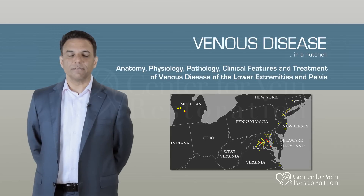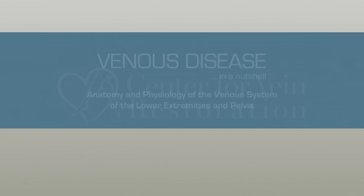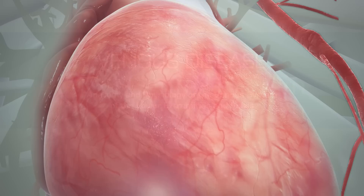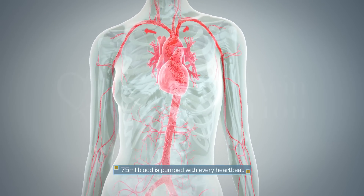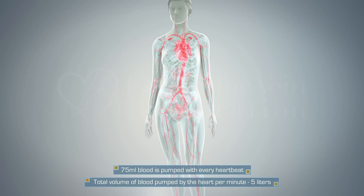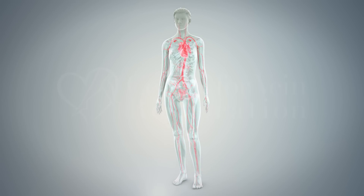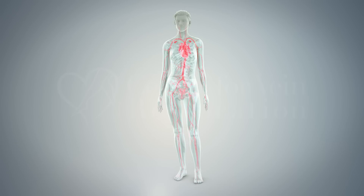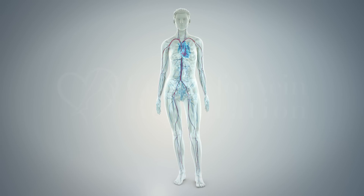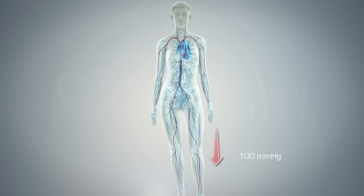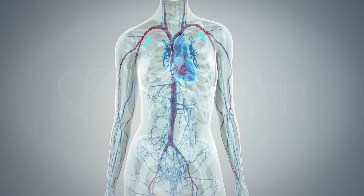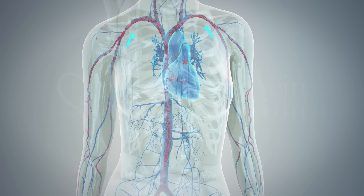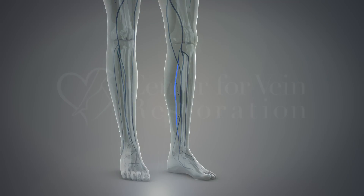With every beat of the heart, 75 milliliters of blood is pumped into the body, generating a cardiac output of five liters per minute. This blood is taken to the ends of our body through the arterial system. From the far reaches of our body, blood is brought back to the heart against a gravitational pressure of greater than 100 millimeters of mercury through an elegantly designed system of veins.